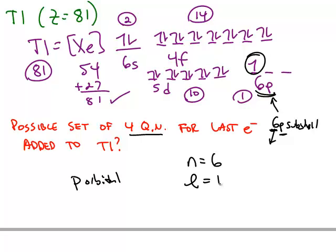Remember, l is 0 stands for s, l is 1 is p, 2 is d, and 3 is f. So even though there are many possibilities for l when n is 6, the only one that matches the 6p is l has to be equal to 1.